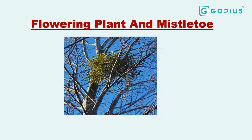The next example is flowering plant and mistletoe. The flowering plant is well developed. The mistletoe depends on the flowering plant for support, water, and nutrients, which it obtains using its hyphae by piercing the roots of the flowering plant. However, mistletoe can also produce its own food. The only thing mistletoe depends on the flowering plant for is nutrients and water, which is why it is known as a partial parasite.